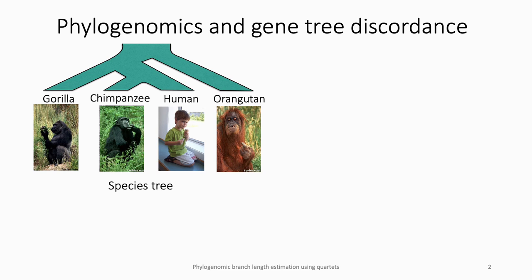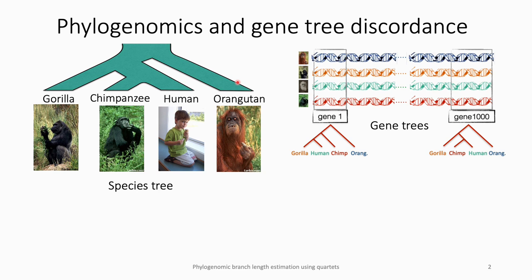In phylogenomics, a core problem is to estimate the evolutionary history of a set of species, often modeled as a species tree. To estimate this evolutionary history, we usually use the genome sequences of these species, which can give us information about how closely related the species are. But a common phenomenon is that the trees estimated on different regions within the genome, which are called gene trees, can be different from each other and from the species tree. And this is a challenge for species tree estimation from these multi-locus datasets.